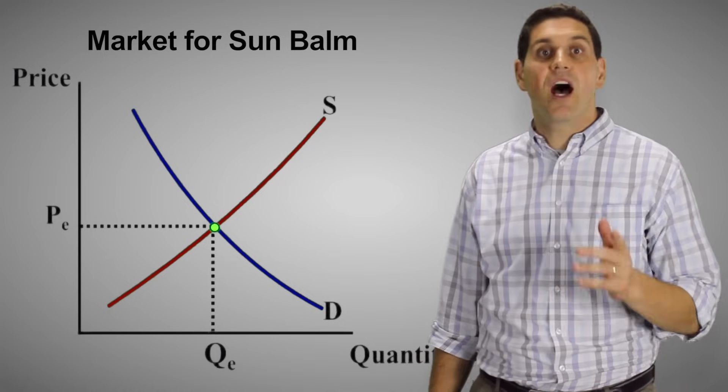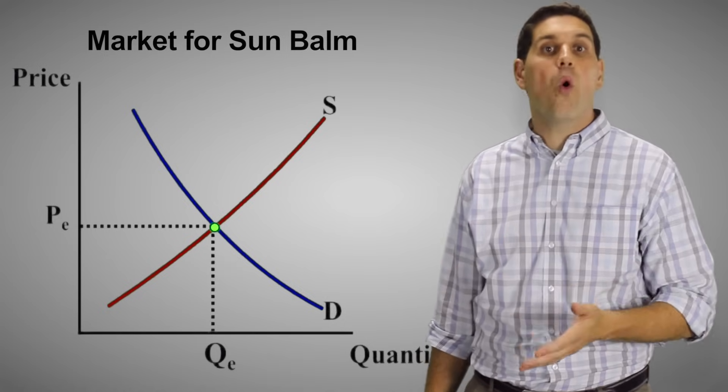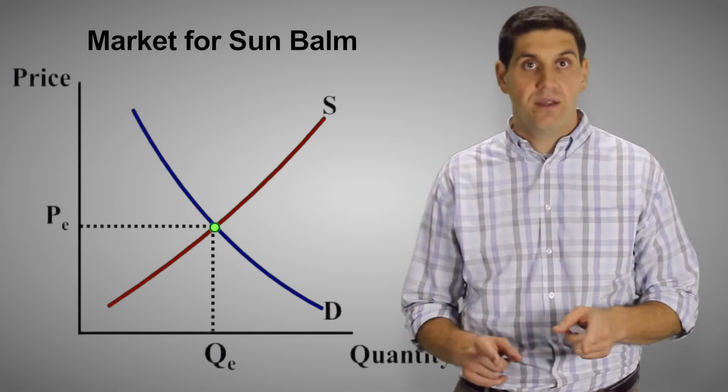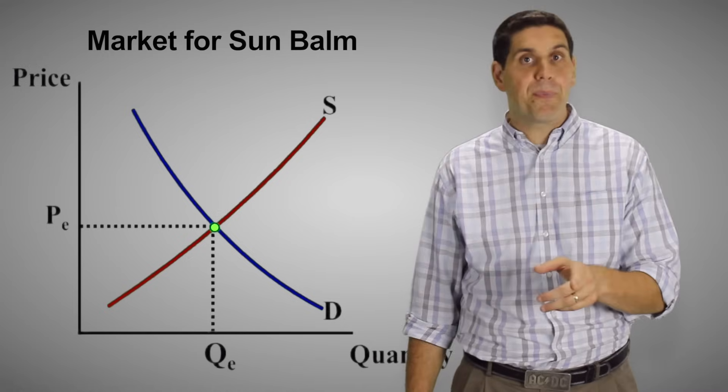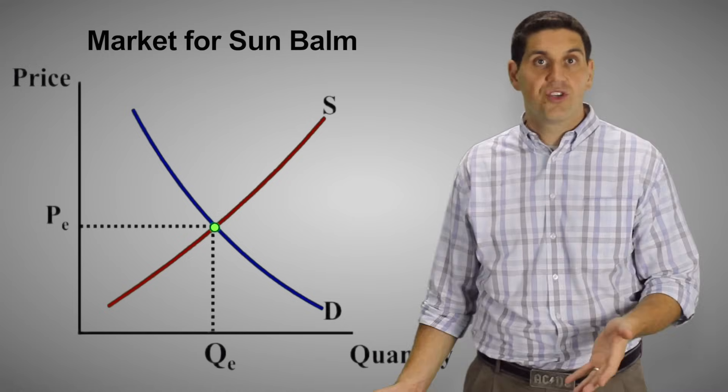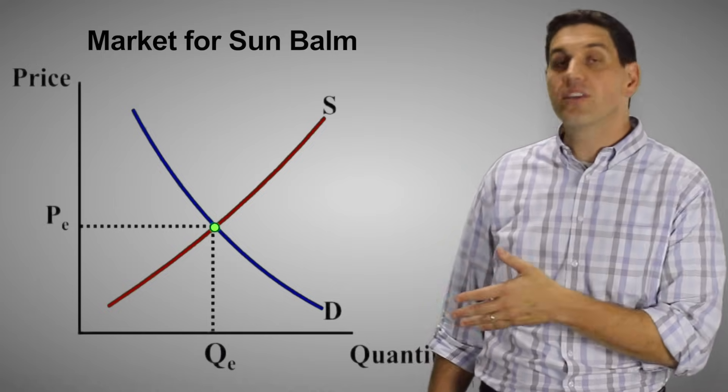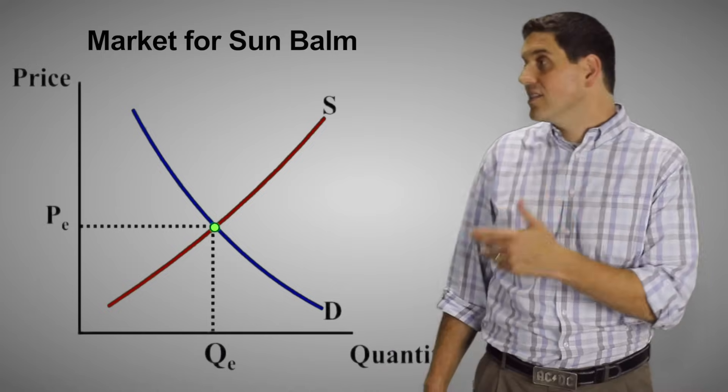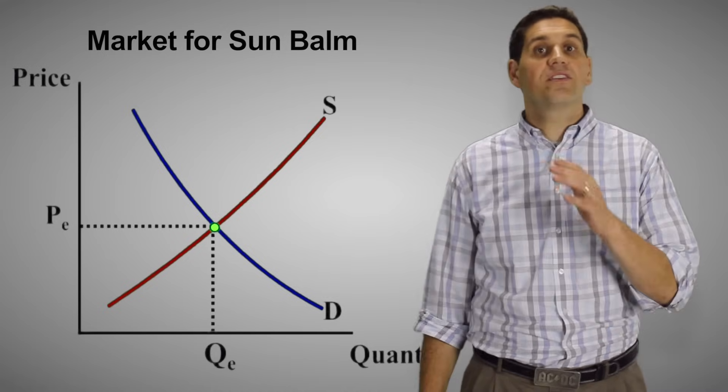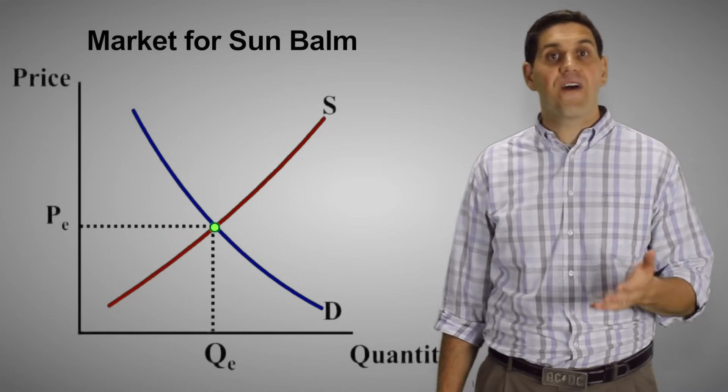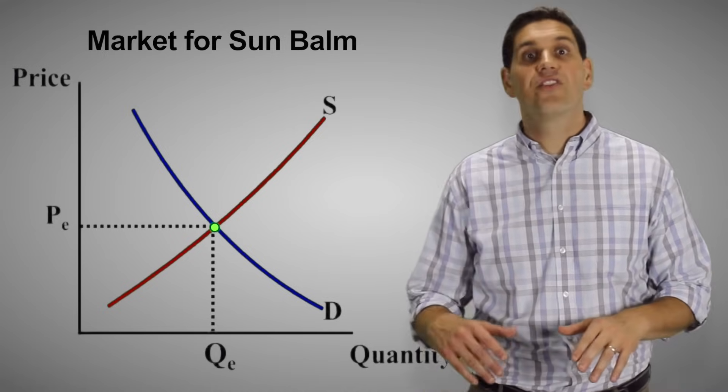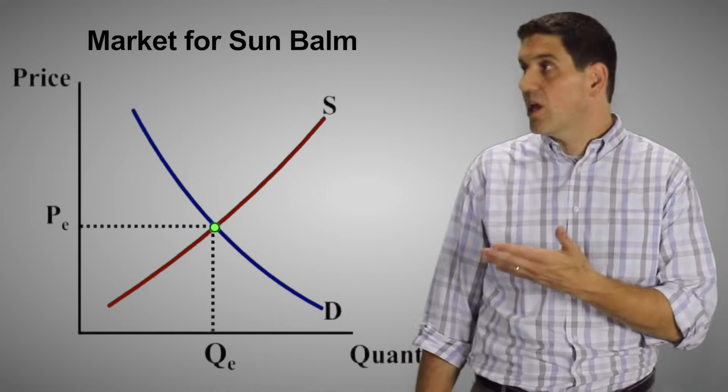The point of learning supply and demand is to understand what happens to price or quantity when there's going to be a change in a market. So this graph helps us to predict what happens when we find out there's going to be a change. The change that happens is that summer suddenly becomes winter. So what's going to happen to the supply or the demand for sun balm? Well it's definitely going to affect demand because it's going to affect consumers. It's going to have no effect on supply or the production of sun balm.